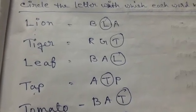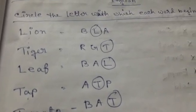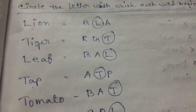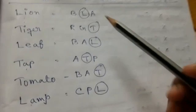Good morning class, LKG subject English. Okay, division lesson, 8th May. Today we learn about circling the letter with which each word begins. Here are some words. You have to circle the letter with which the words begin.